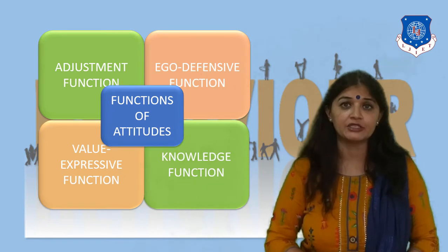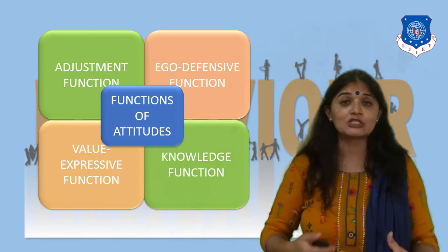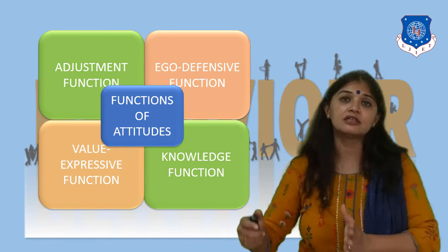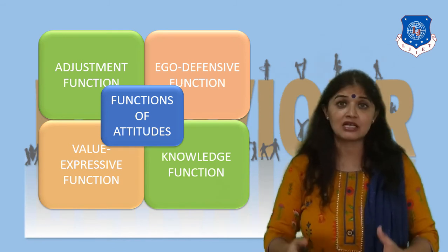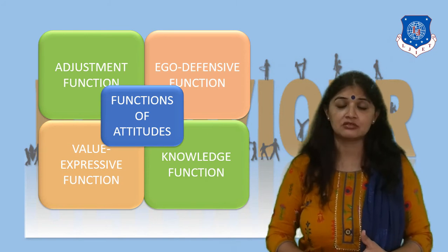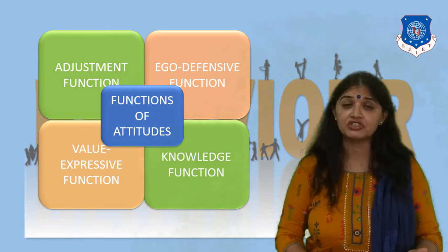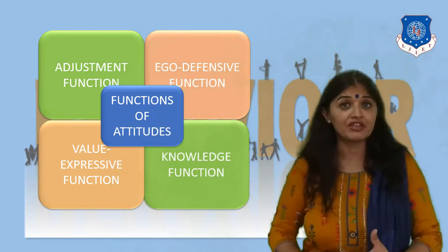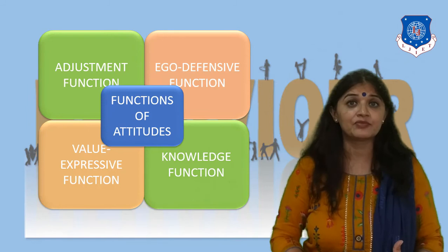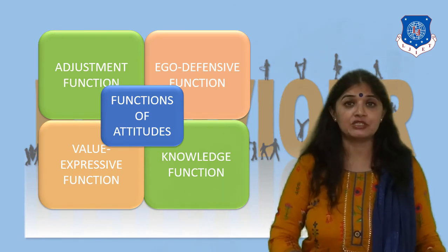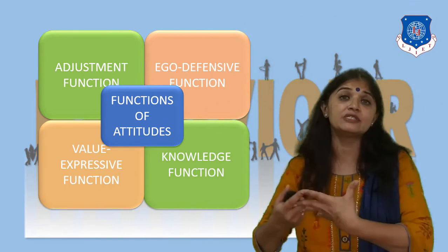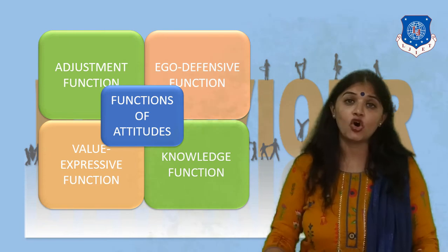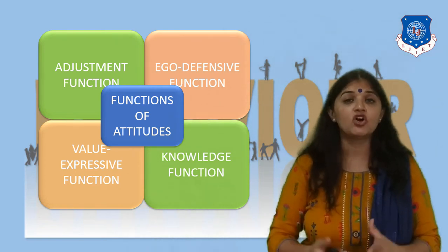The fourth function of attitude is the knowledge function. Knowing something is going to happen gives a sense of control, and a certain kind of attitude ensures that a certain thing will happen in the future. This is how the knowledge function works as far as attitude is concerned. So in summary, attitude has four functions: the adjustment function, the ego defensive function, the value expressive function, and the knowledge function.